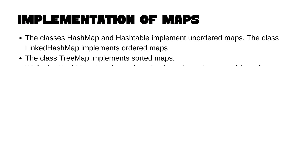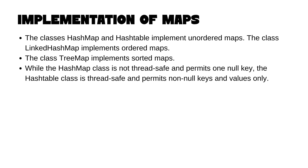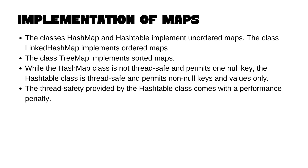Now let's look at the HashTable class. The HashMap class is not thread safe and permits only one null key. The HashTable class is very similar to HashMap — the only difference is it is thread safe and permits non-null keys and values only. The thread safety provided by the HashTable class comes with a performance penalty, so HashMaps are always the better choice. We don't normally use HashTable unless required.